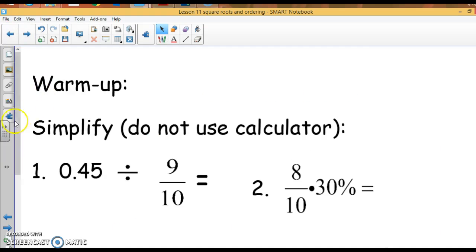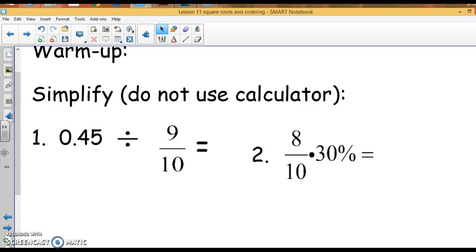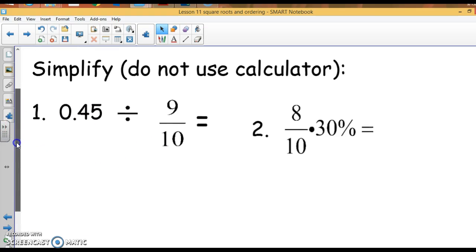Now, we are going to look at these two problems. If I do 0.45 divided by 9 tenths, I've got a decimal and a fraction. You cannot do this problem with a decimal and a fraction. So, you need to either change them both to decimals or both to fractions. And I'm going to do this first one both ways.